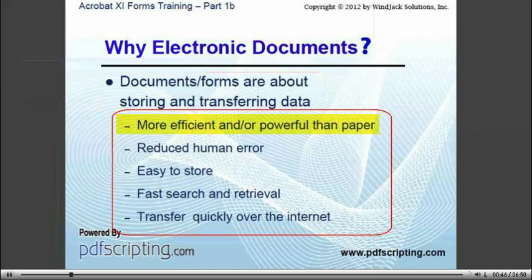The tools used to create and manipulate electronic documents are much more powerful than the traditional set of tools used for paper. As an example, a word processor is much more efficient than a typewriter or a pencil. And by the same token, electronic document workflows — that is, the way that we process the information — can be much more efficient than the paper equivalents.